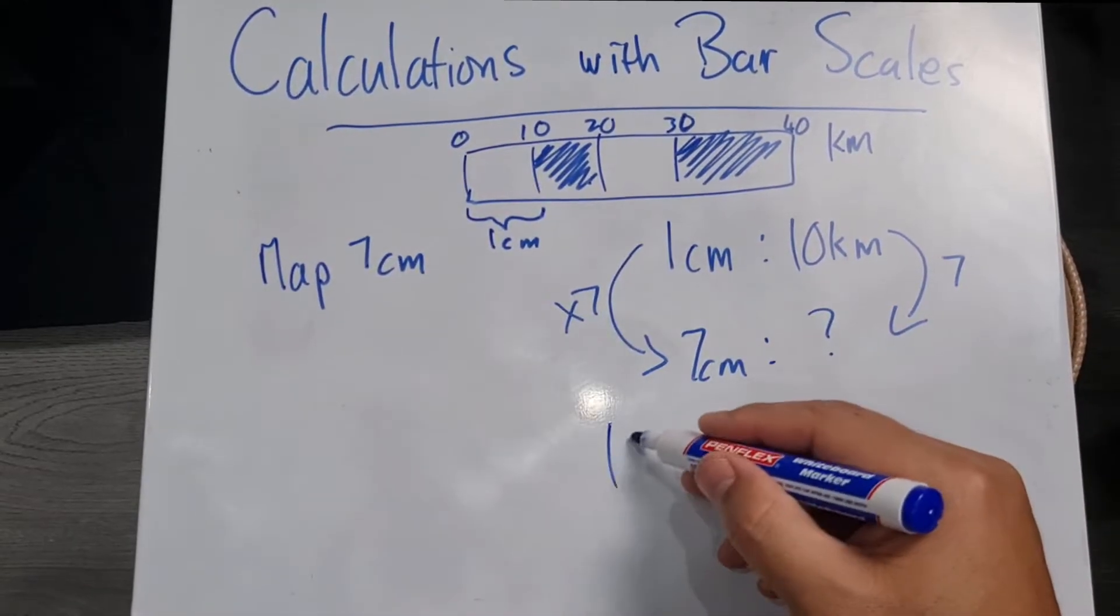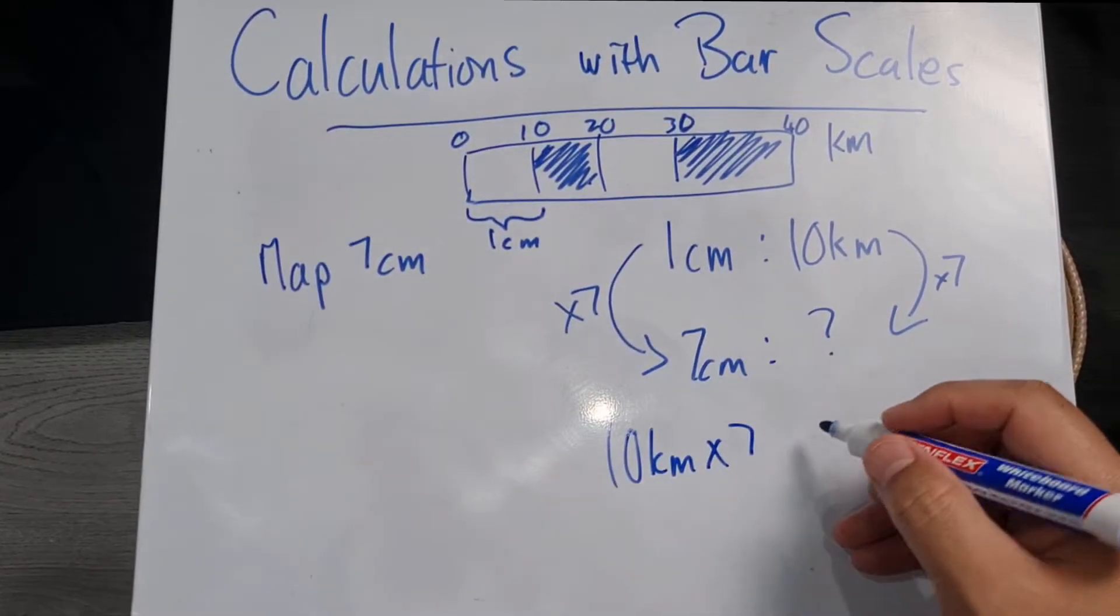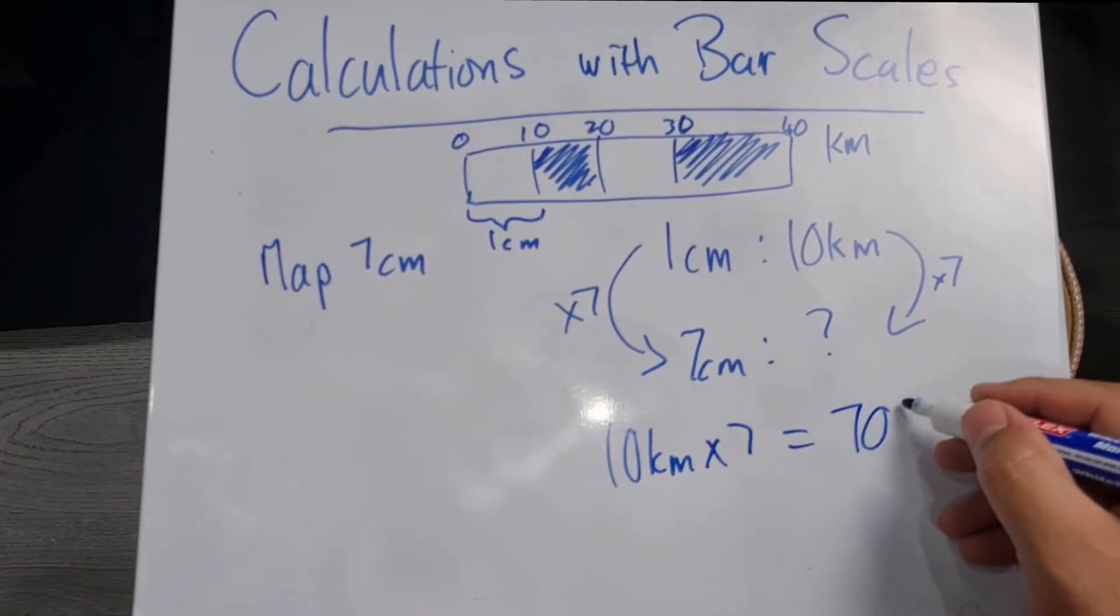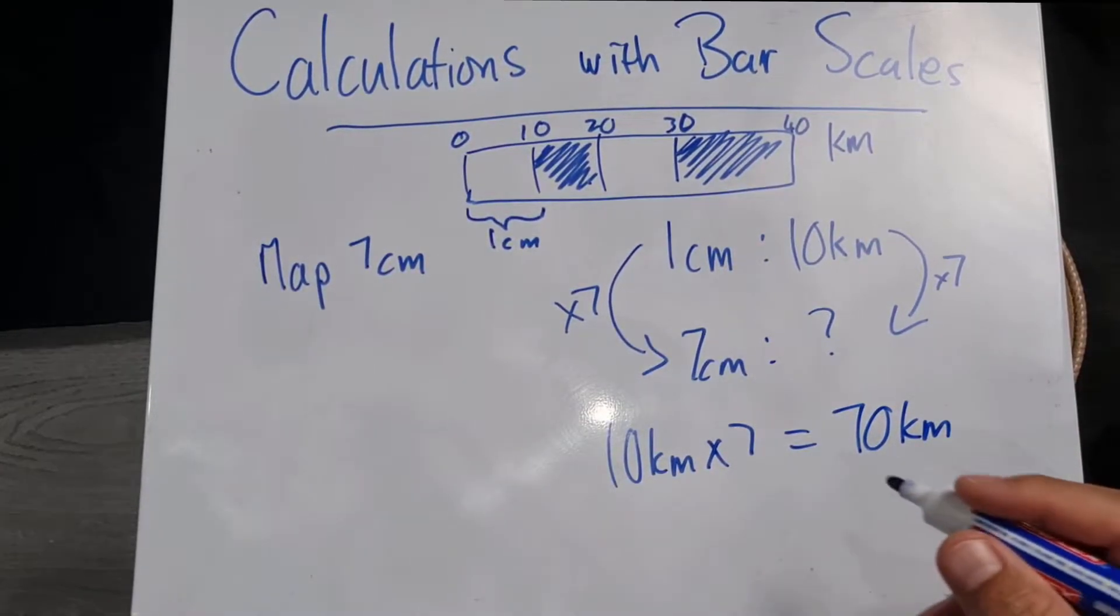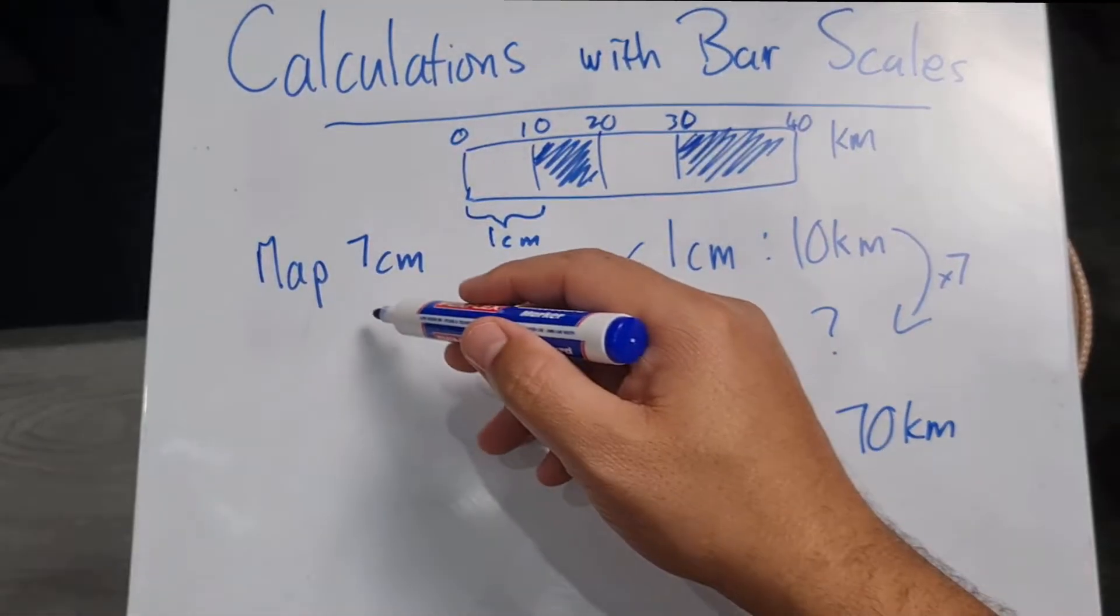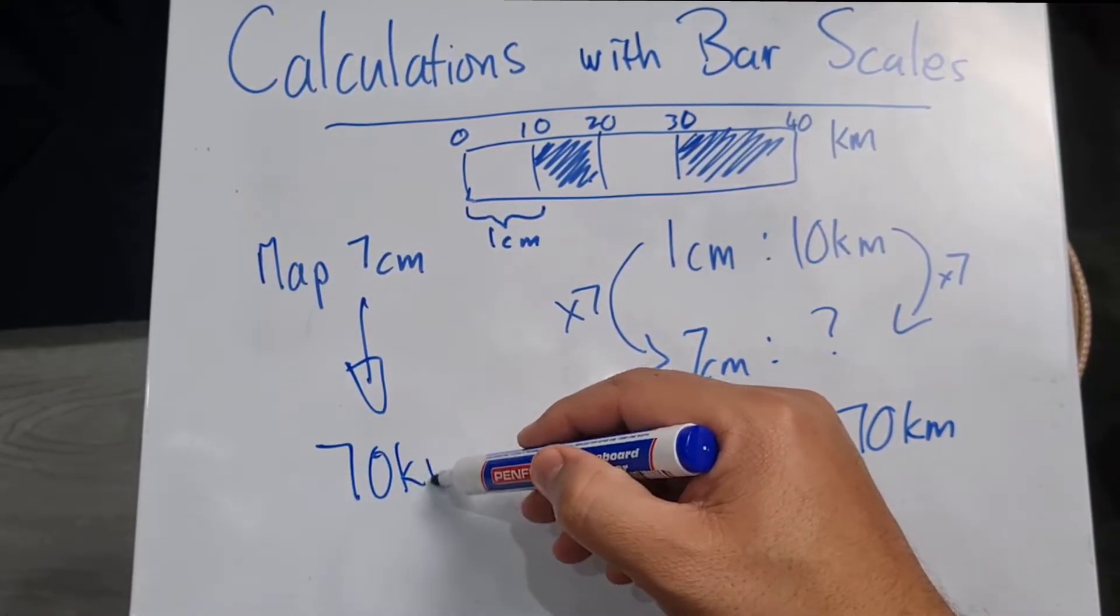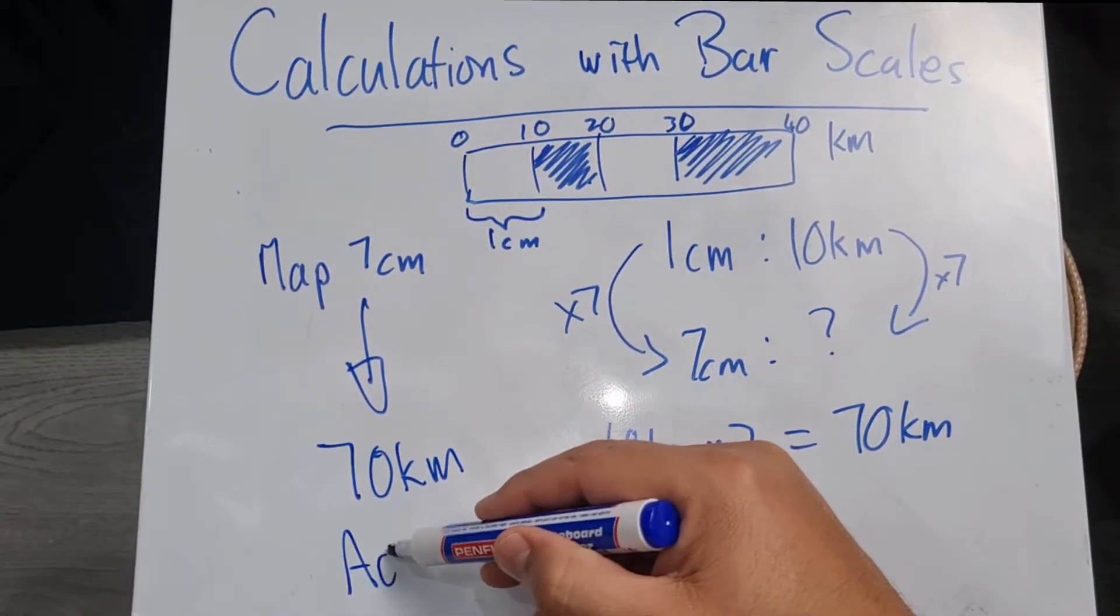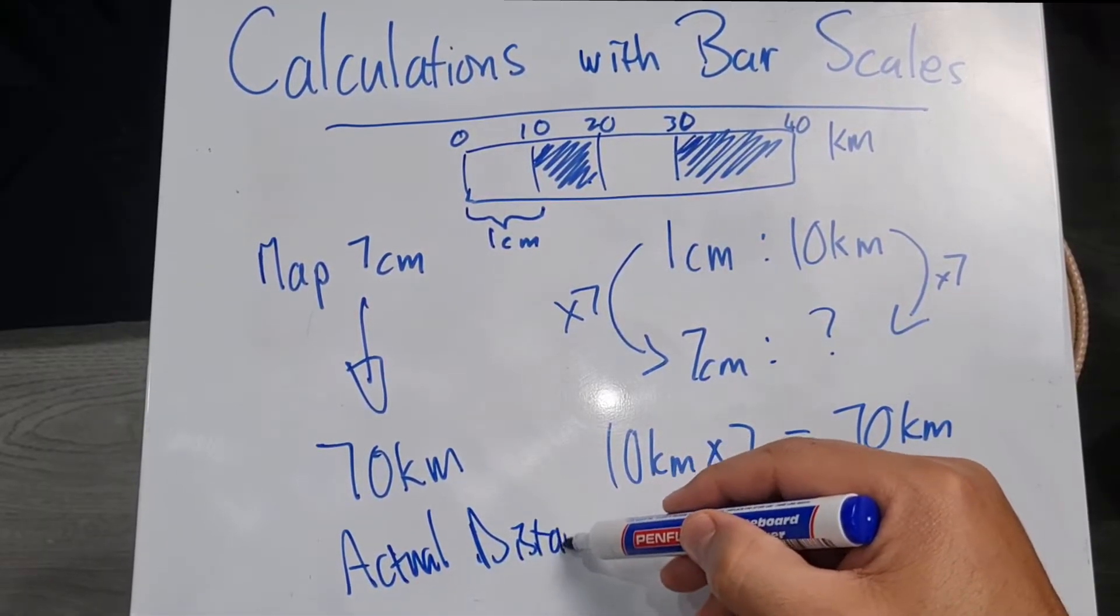And that's going to give me 70 kilometers. So this basically then means that my seven centimeters on the map is equal to 70 kilometers of what we call actual distance.